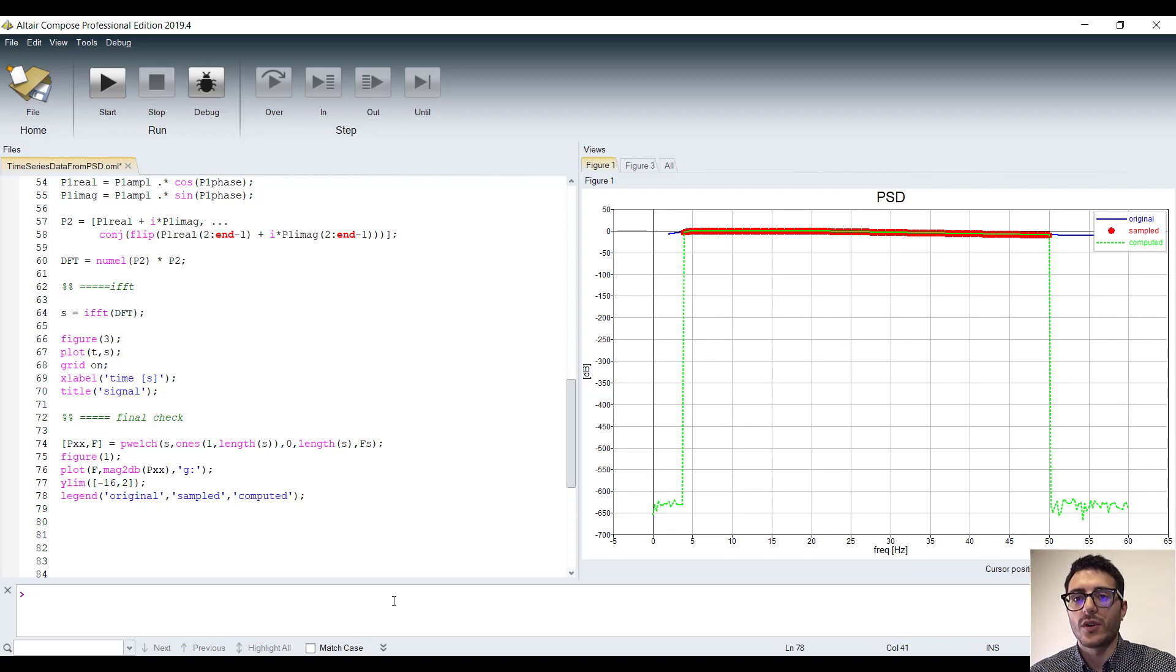We can also notice that outside the frequency range we have defined, the PSD values are 0, which in a dB scale is equivalent to a negative number with a big absolute value.